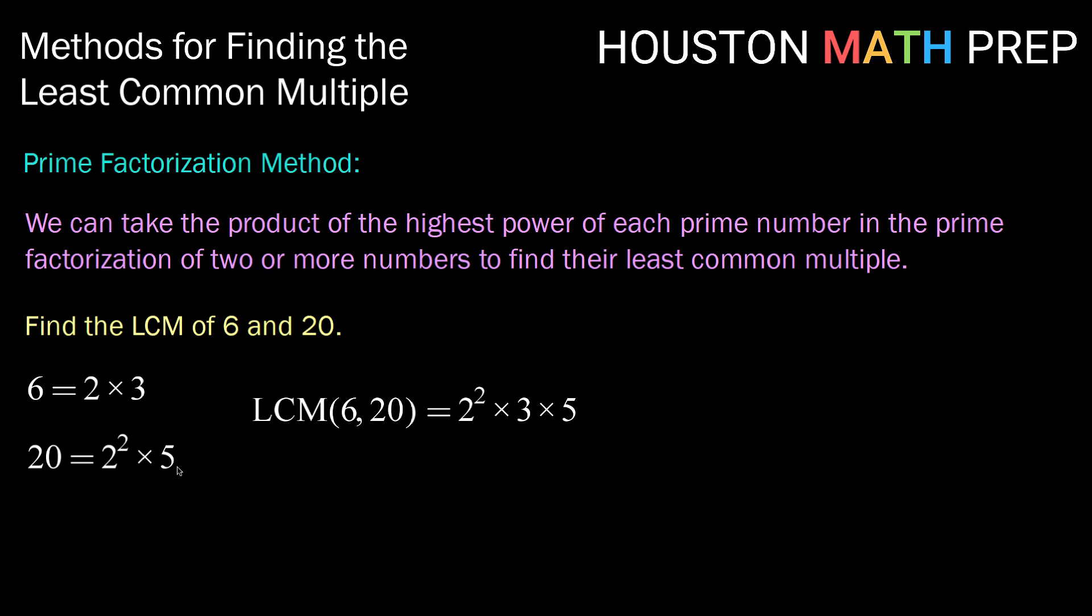So we need to use all primes, and if they share any, the highest power of that prime. That gives us our least common multiple of 6 and 20 is 60.